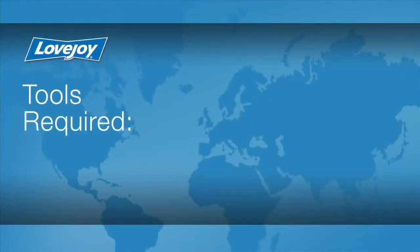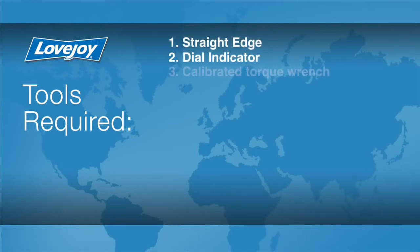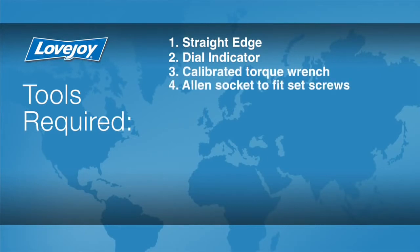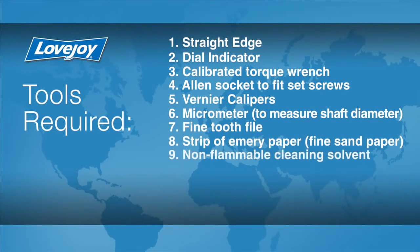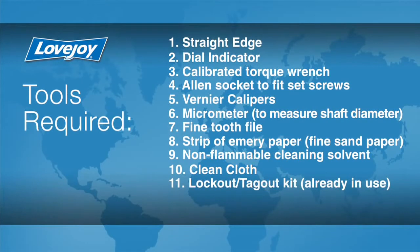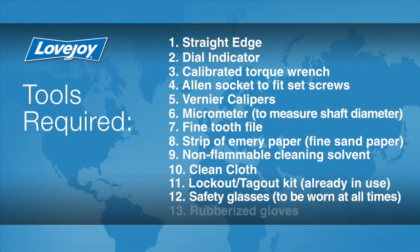Let's look at the necessary tools we will need to perform this installation. A straight edge, a dial indicator, a calibrated torque wrench, Allen socket to fit the set screws, Vernier calipers, a micrometer to measure the shaft diameter, a fine tooth file, a strip of emery paper, non-flammable cleaning solvent, a clean cloth, lockout tagout kit, safety glasses, and rubberized gloves.